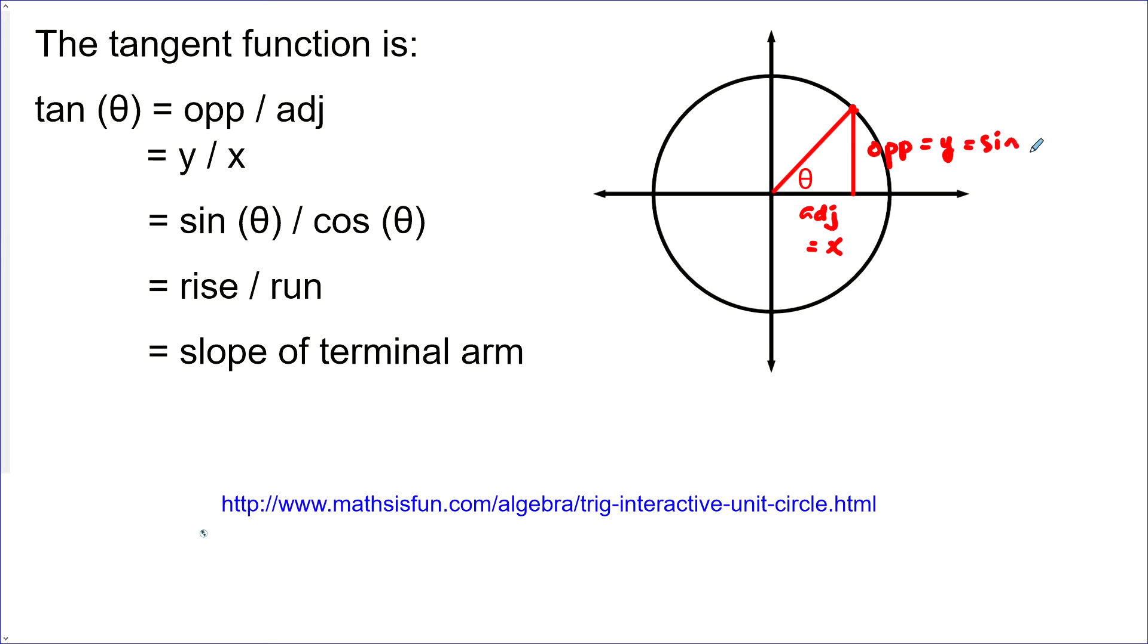It's also sine theta over cos theta. It's also rise over run, which means it's the slope of the terminal arm.